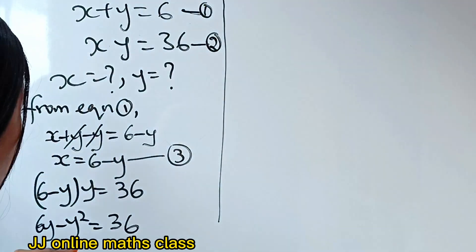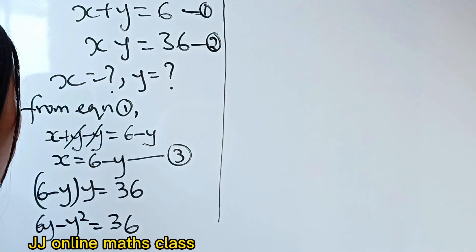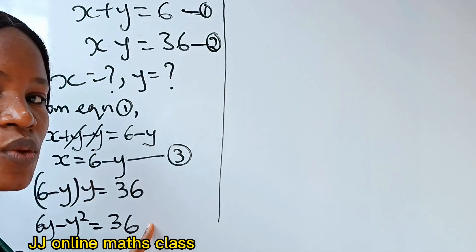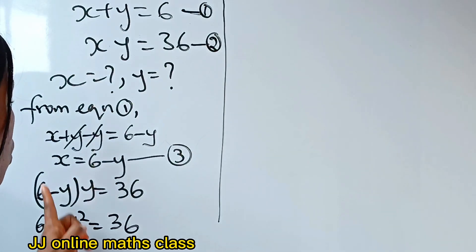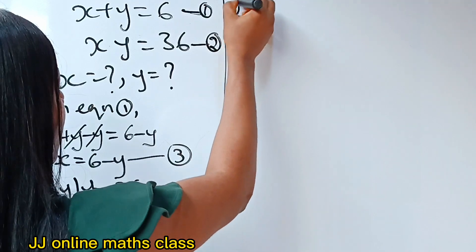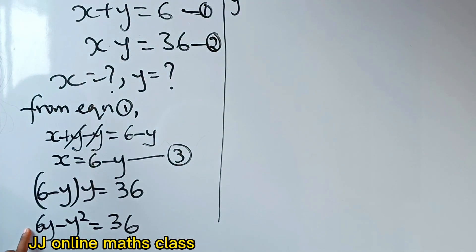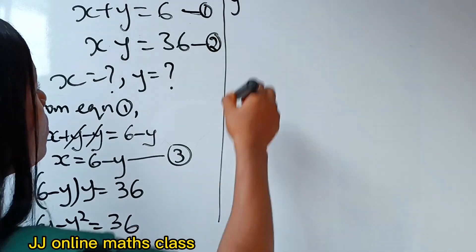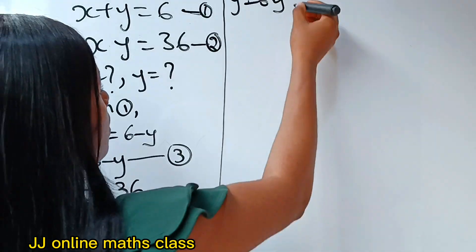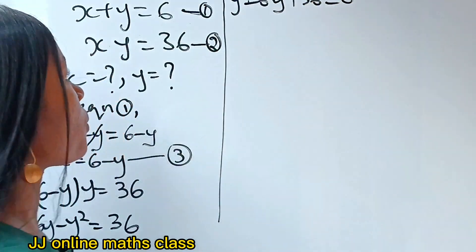Let's take everything to the right-hand side. Minus y squared crosses over to become plus y squared, and 6y becomes minus 6y. We already have plus 36 on the right, so we have y squared minus 6y plus 36 equals 0.